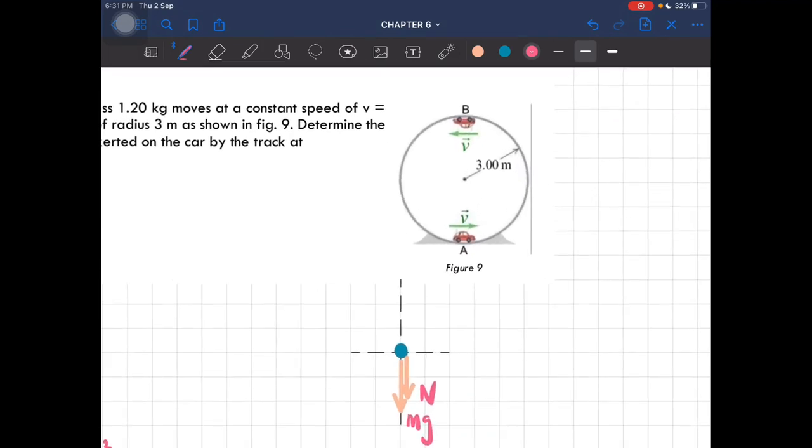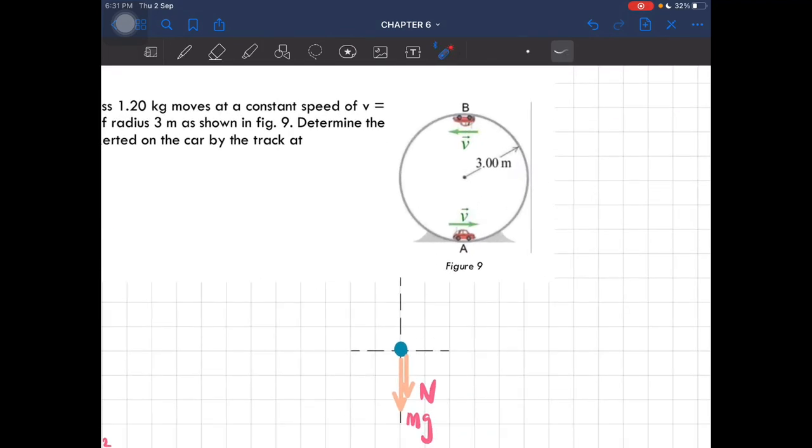Why? Because now the normal force that is in contact with the car here, it is not in contact with the one at the top. That's why the N is pointing downwards.